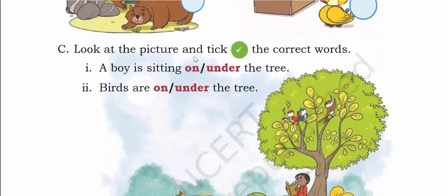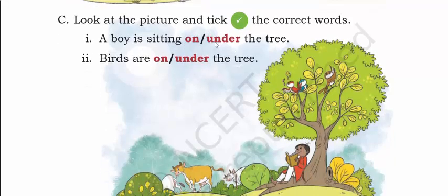Now look at the picture and tick the correct words. A boy is sitting dash the tree. Here the boy is sitting — is it on the tree? No, it is under the tree. This position is called under the tree. Birds are dash the tree. Here you can see birds — they are on the tree. These birds are sitting on the tree, so this position is called on the tree.